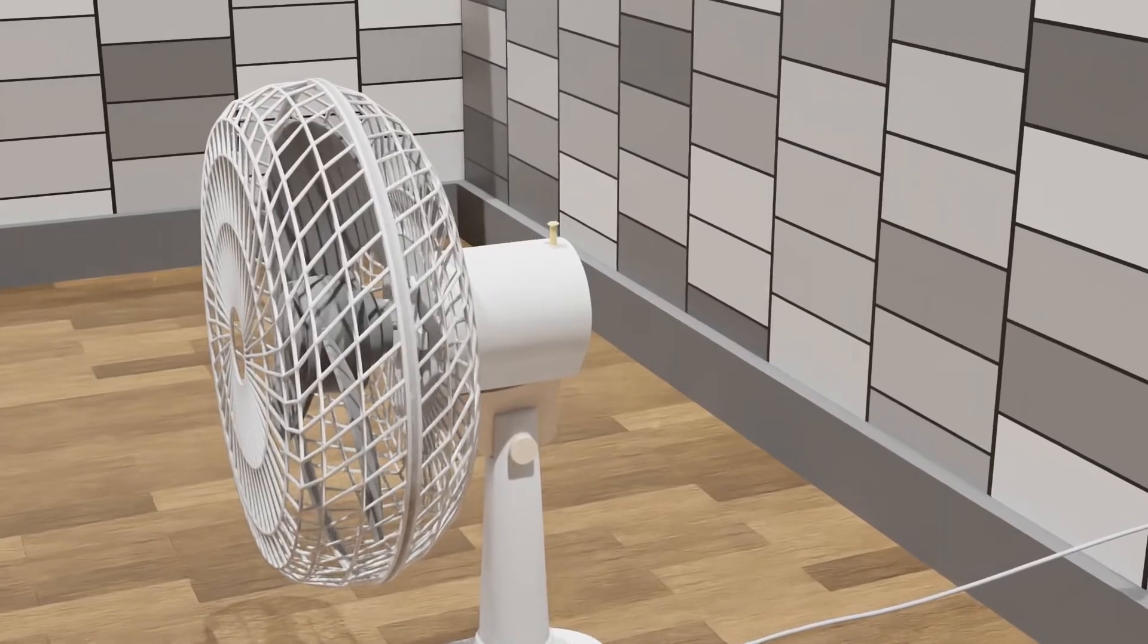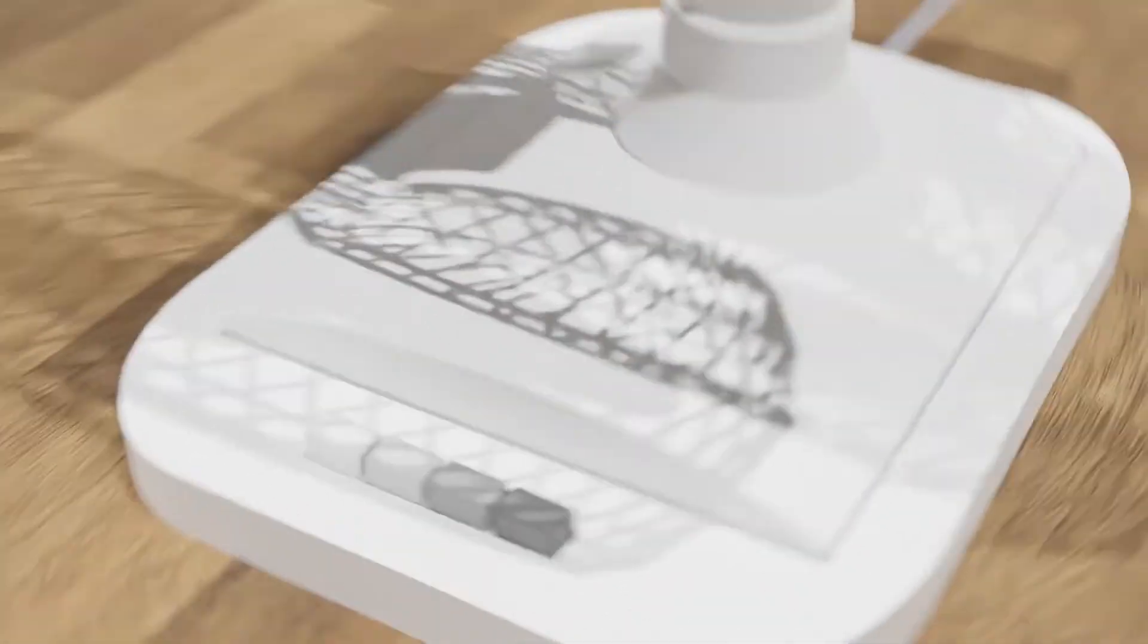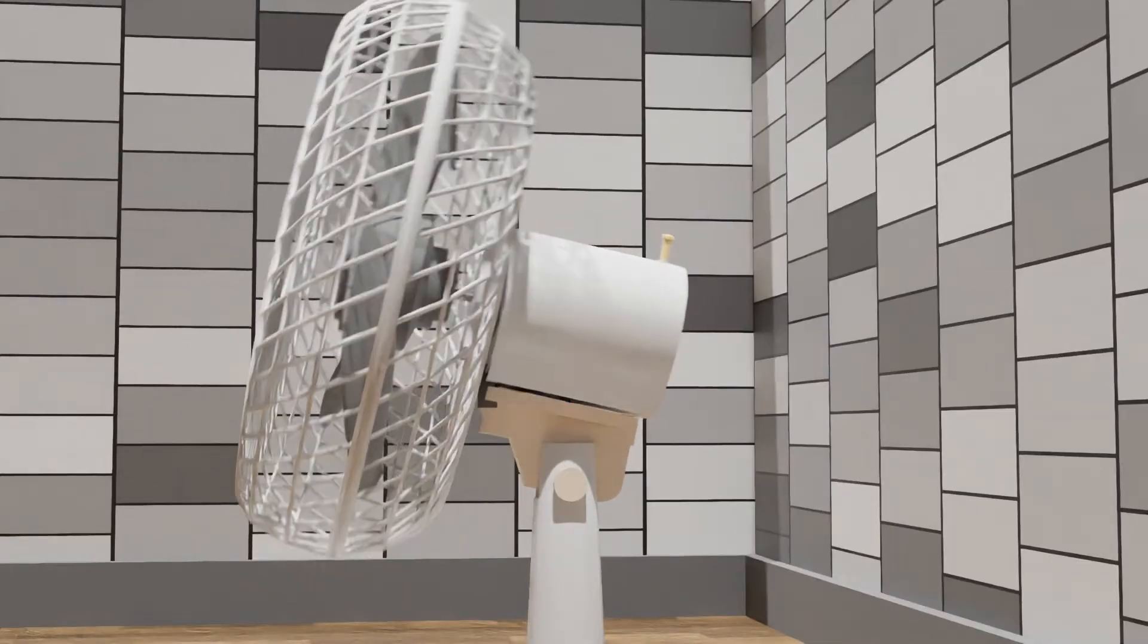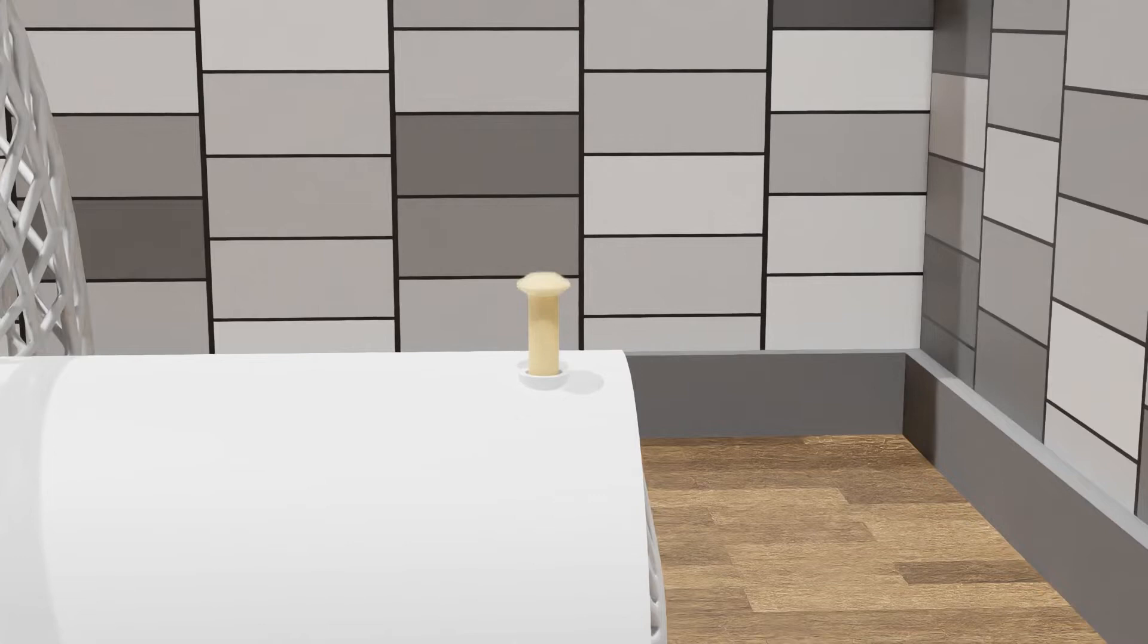First, let's have a quick tour of the basic features of this fan. At the bottom there are four buttons each having different controls, a dial to control the pitch of the fan, and a pin on the top to make the fan oscillate.